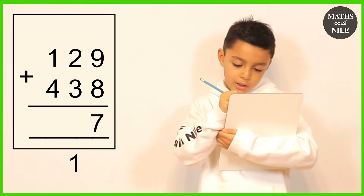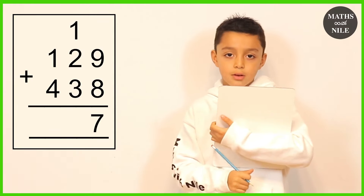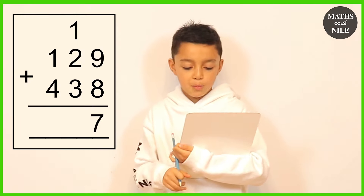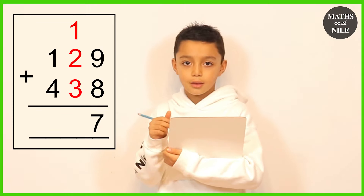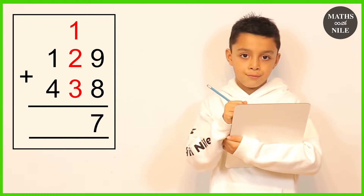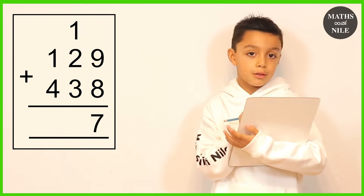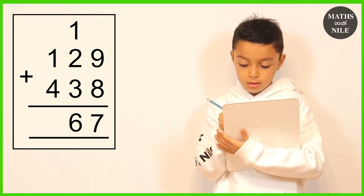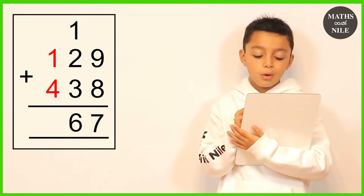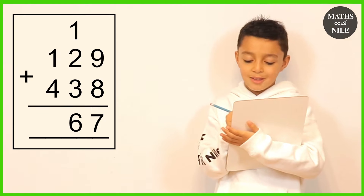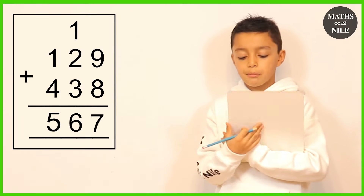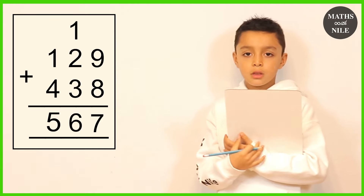We put the carried 1 on top of the tens column, and that 1 is added in with the tens. So we do 1 plus 2, which is 3, and then 3 plus 3 is 6 — put the 6 underneath the tens column. Then the hundreds: 1 plus 4 is 5, put our 5 underneath the hundreds column. So 129 plus 438 equals 567.